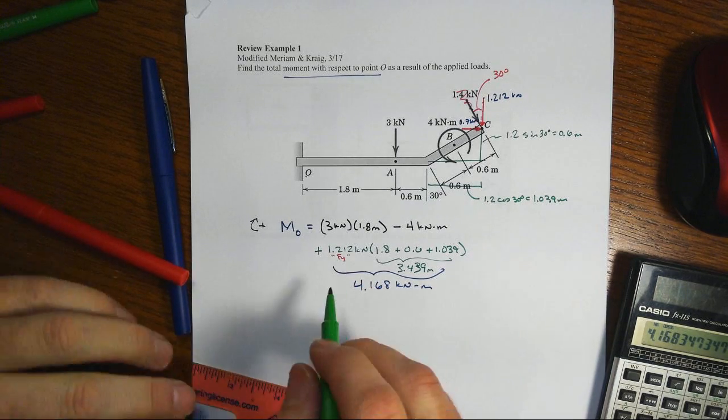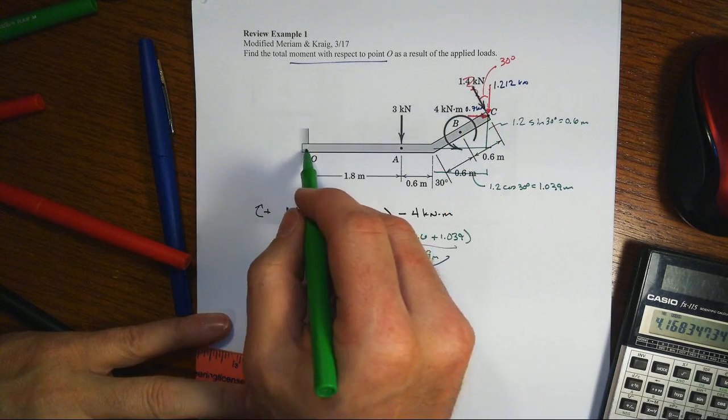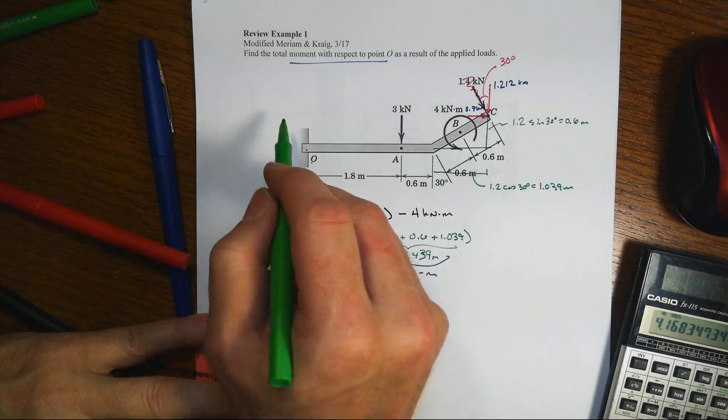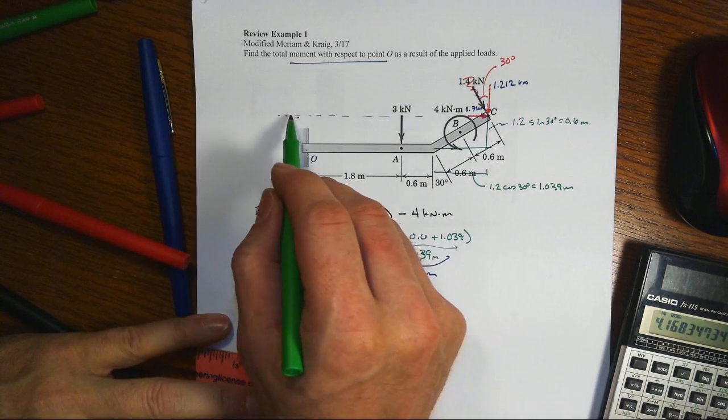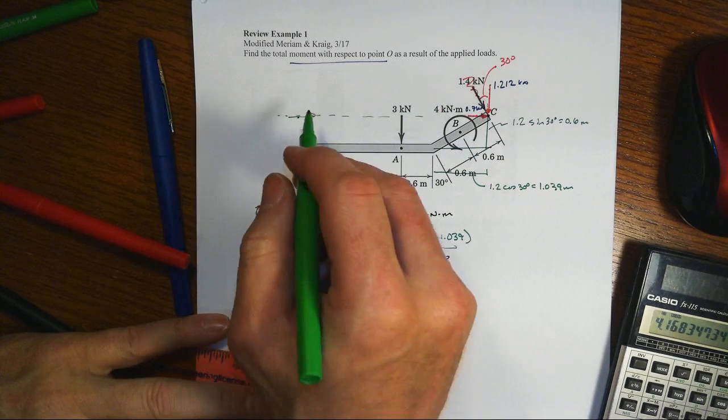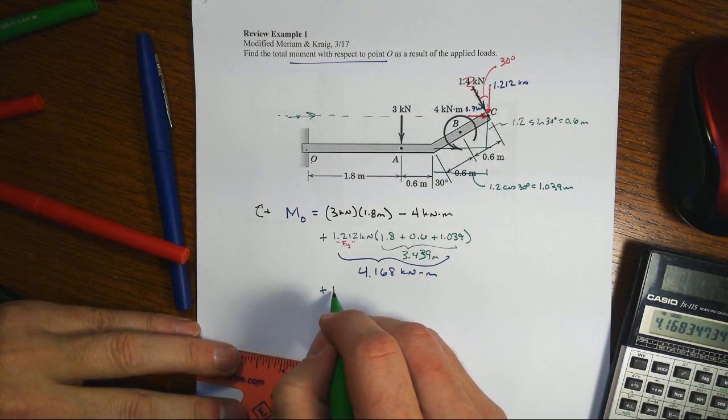So let's get then the other part. We've got to get the X component, which about O is also going to create a clockwise kind of moment. So if we extended this line of action, put it back here, that direction would want to spin about O. So that's going to be plus...